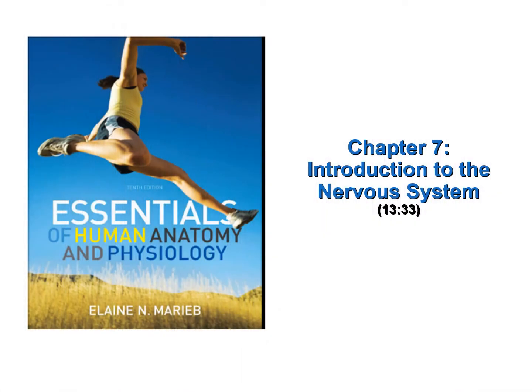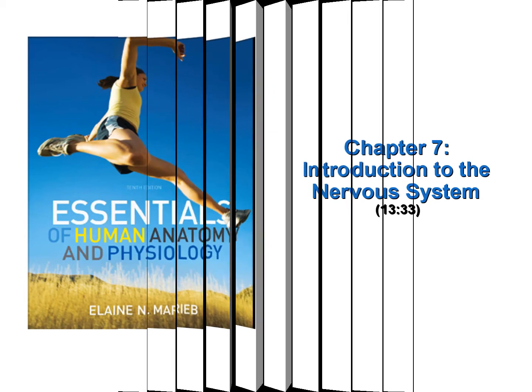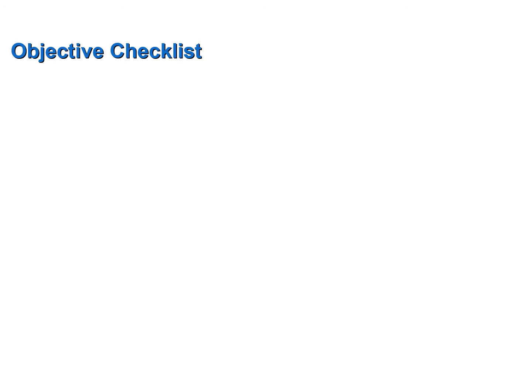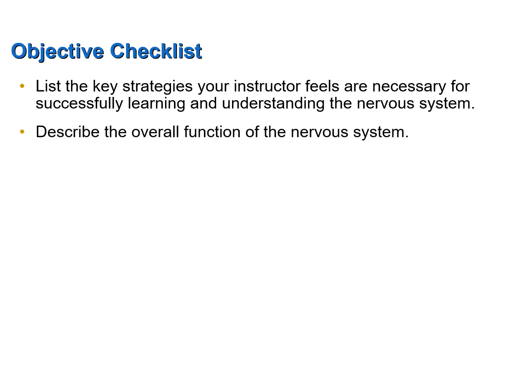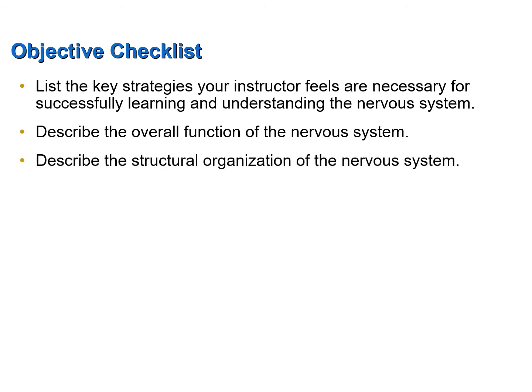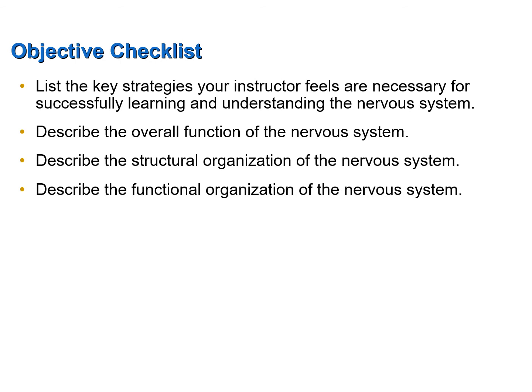This screencast will introduce you to the nervous system, which may be found in Chapter 7 of your textbook. This screencast was designed to help you achieve the following objectives: list the key strategies your instructor feels are necessary for successfully learning and understanding the nervous system; describe the overall function of the nervous system; describe the structural organization; and describe the functional organization of the nervous system.